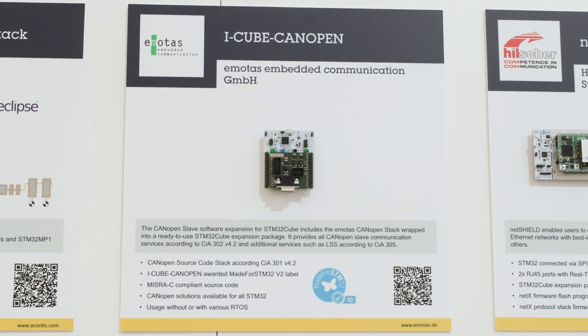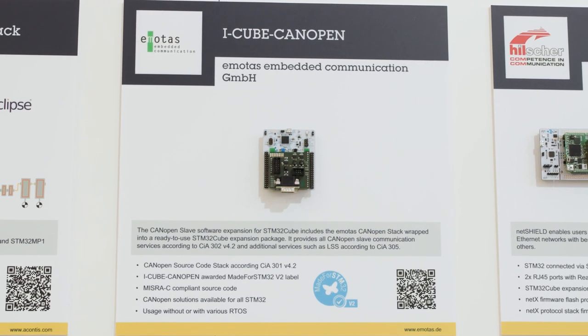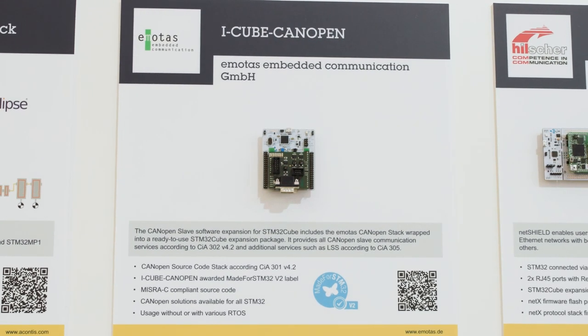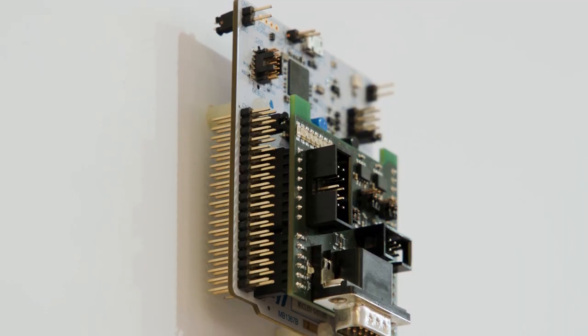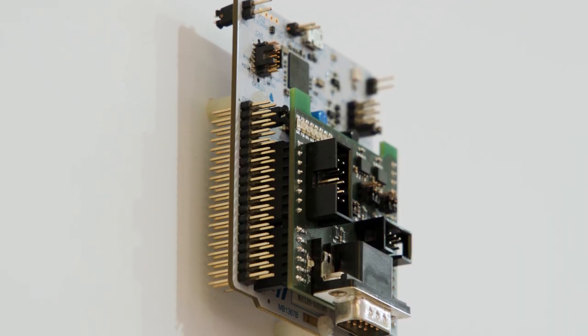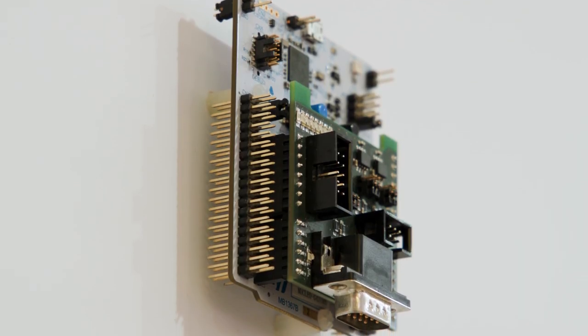This solution enables an Ethernet network design with multiple physical paths and backup links for redundancy purposes. If a link fails, STP or RSTP automatically reconfigures the network to establish a new loop-free tree topology. Emotas brings a proven CANopen slave stack as an STM32 Cube expansion, as well as CANopen software tools.